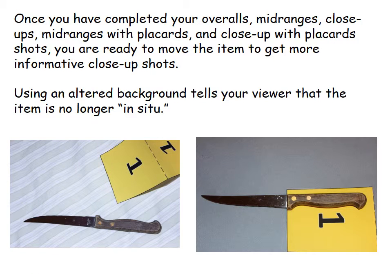Once you've completed your overalls, your mid-ranges, your close-ups, your mid-ranges with placards, and your close-ups with placards, you're now ready to move the item to get more informative close-up shots. You want to use an altered background to tell your viewer that this item is no longer in situ — it's no longer where you found it in the scene — and it shows that you've now manipulated it. In this situation, I moved it onto a different background and flipped the knife over to show the reverse side. I kept the placard in the shot so the viewer knows this is the same item that was on the striped bed sheet, but now it's been moved to show other characteristics.